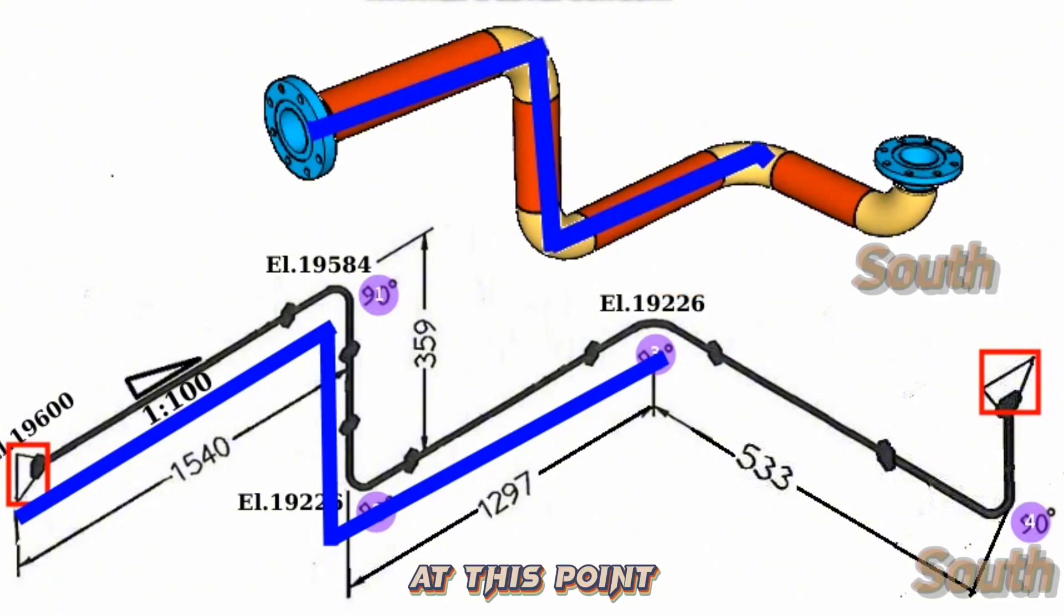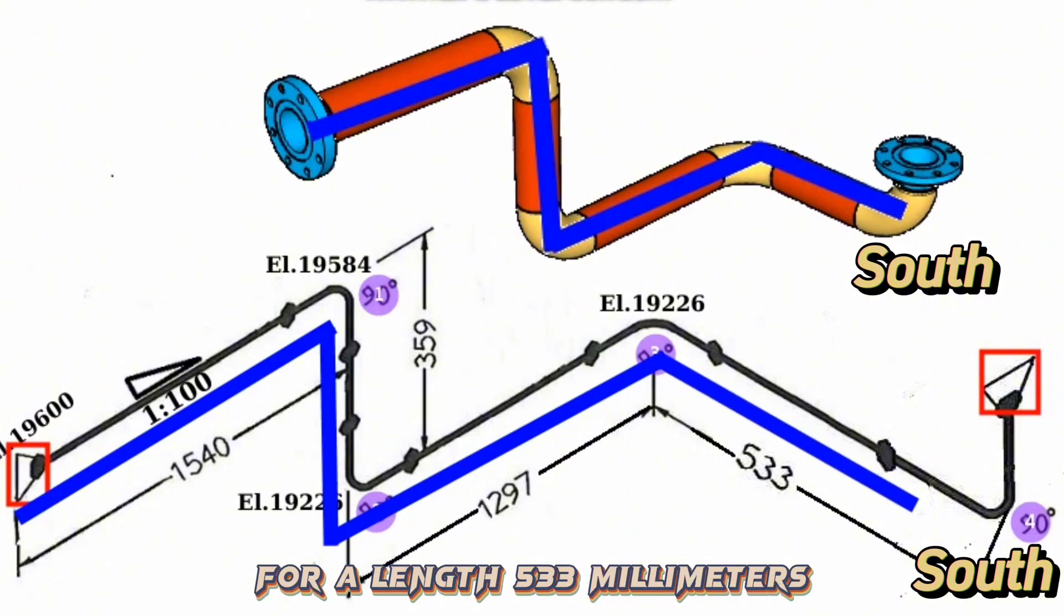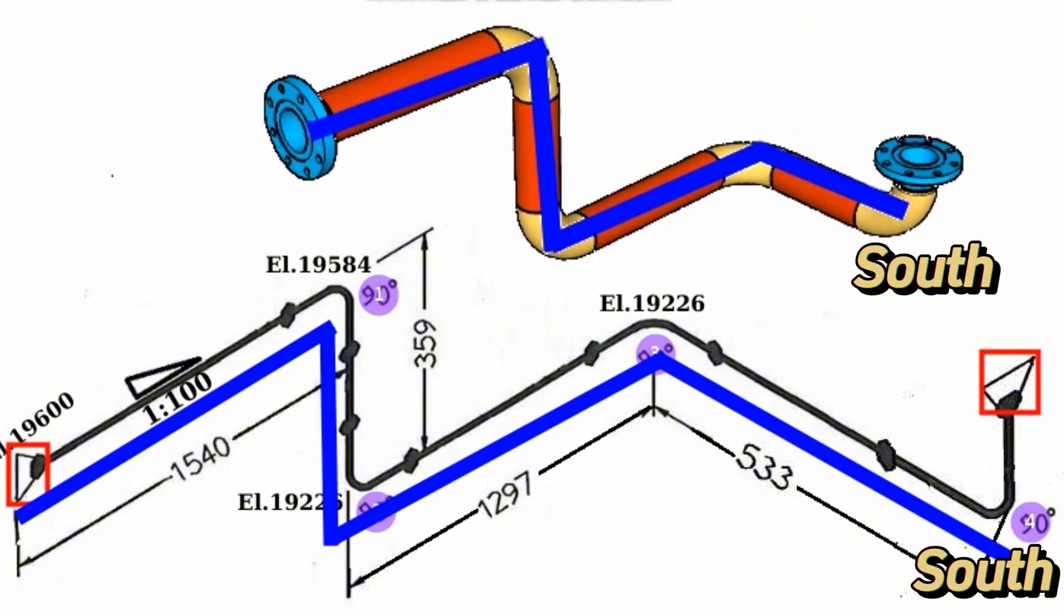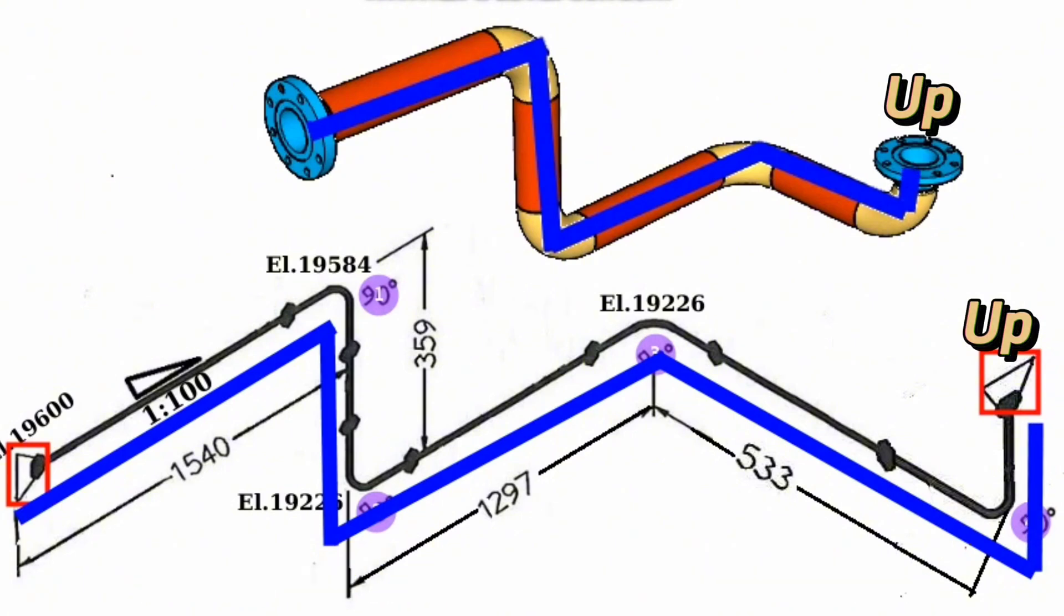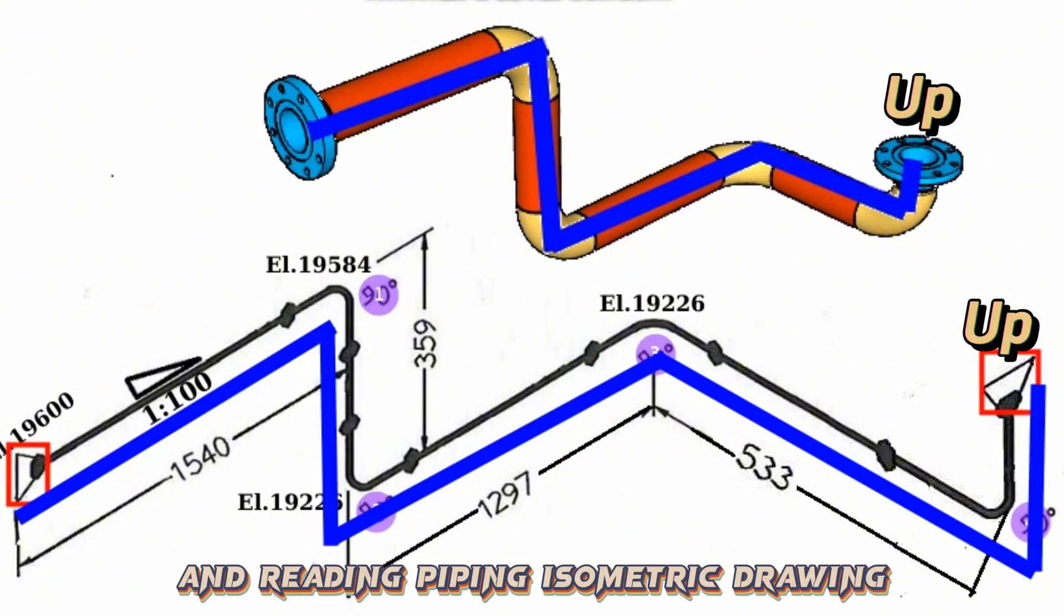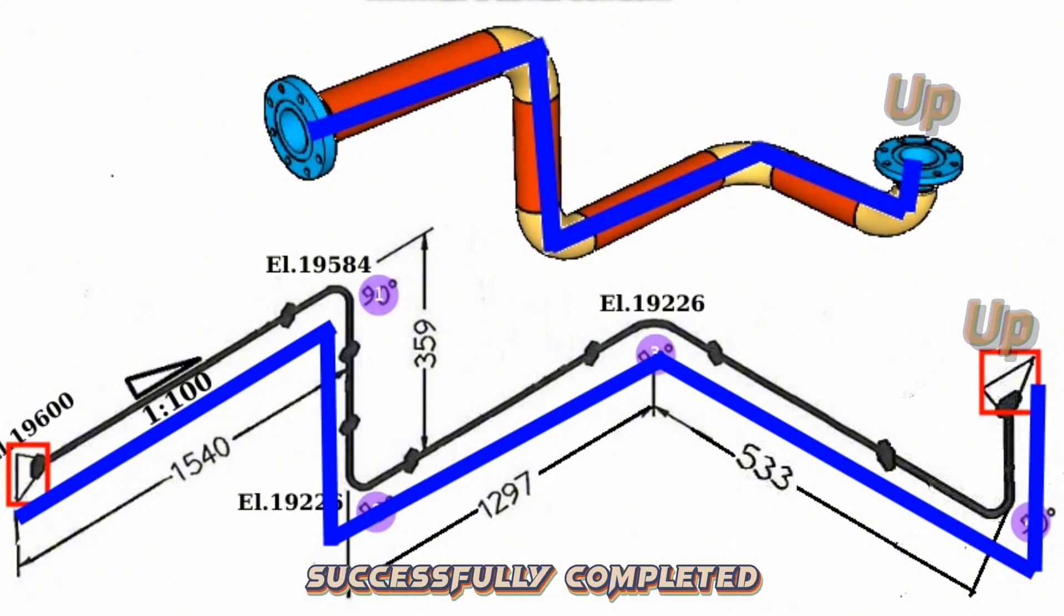At this point the pipeline turns to the southward for a length of 533 mm. At last the pipeline turns to the upward, and reading piping isometric drawing successfully completed.